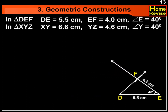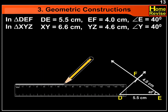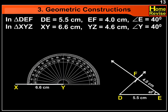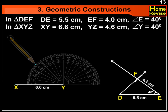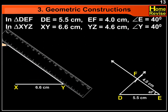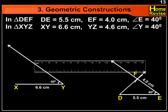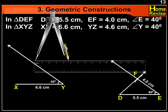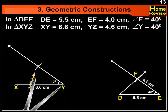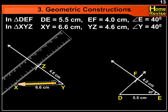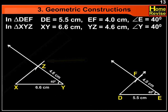Let us construct triangle XYZ with the help of the given measures. The answer is triangle XYZ is the required triangle which is similar to triangle DEF.